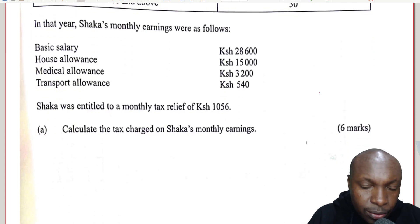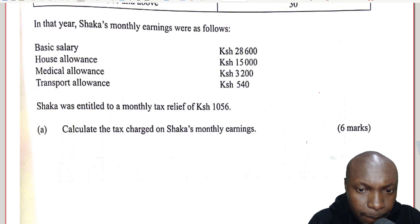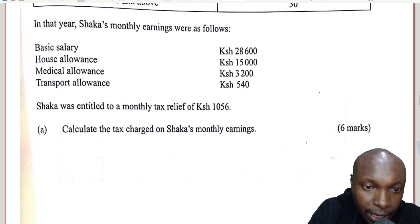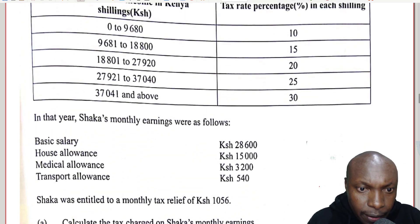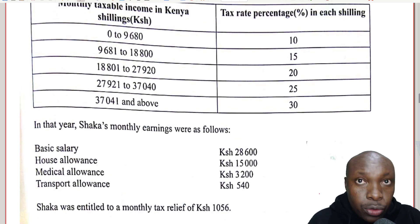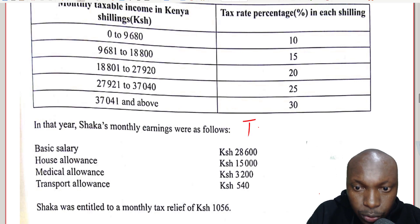Which tax is this? We have two types of tax — gross tax and net tax. Since it is the tax charged on the monthly earnings, this will be the net tax. Now, to do this, we have to get the amount that we are going to tax first, and that is what we call the taxable income.